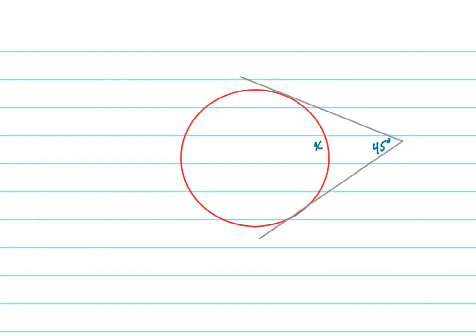Okay, so we're trying to find x here, which is the arc intercepted by the two tangents on the outside of the circle.